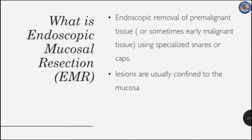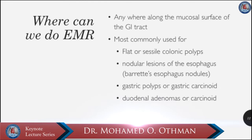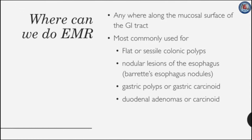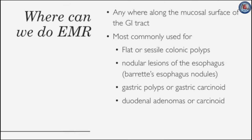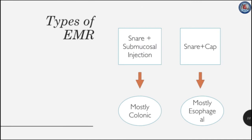Endoscopic mucosal resection (EMR) is the endoscopic removal of premalignant tissue or sometimes early cancers using a specialized snare or caps. Lesions are usually confined to the mucosa when performing EMR. EMR can be done anywhere along the mucosal surface of the GI tract, but most commonly it is used for flat or sessile colonic polyps, nodular lesions of the esophagus such as Barrett's esophageal nodules, gastric polyps or gastric carcinoid, and duodenal adenomas or duodenal carcinoid.